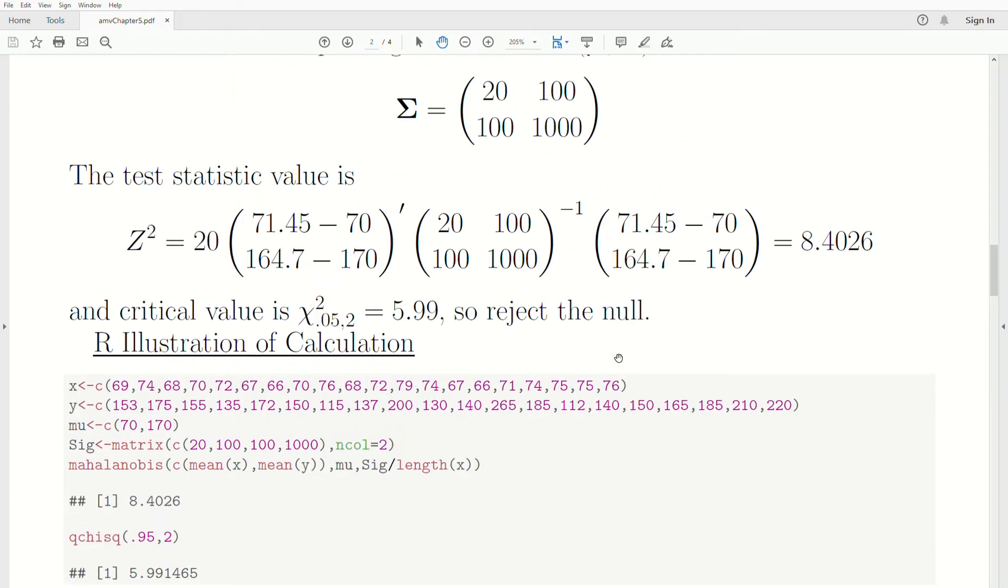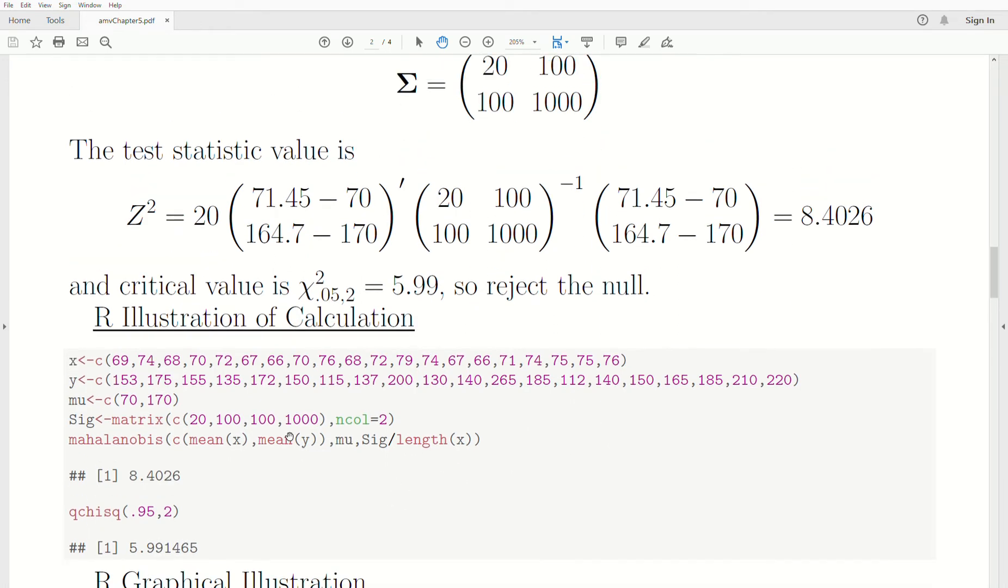Sig is the covariance matrix that we're assuming to be normal. So this value, the test statistic is really a Mahalanobis distance. And so the vector is the sample mean vector. So remember, I have to use a C, which says this is create a vector. And I want the first component to be the mean of the X's, second component, the mean of the Y's. Mu is our hypothesized value. Sig, now the covariance matrix, remember it's σ divided by n. And so the length of X tells us how many observations, so it's 20.